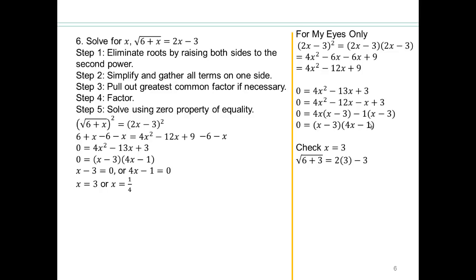So let's check. If you put x equals 3, 6 plus 3 is 9, square root of 9 is 3. 2 times 3 is 6. 6 minus 3 is 3. So 3 equals 3. So that works out, doesn't it? All right. So x equals 3 works out.